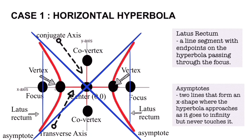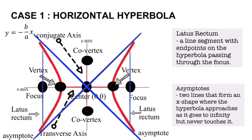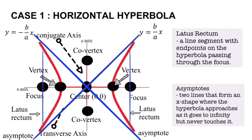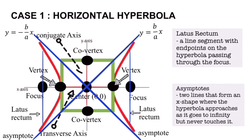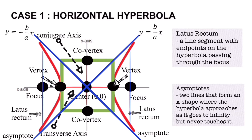The next parts are the asymptotes — these are the two lines that form an X shape where the hyperbola approaches but never touches. The equation of the asymptote with a negative slope is y equals negative b over a times x, while the asymptote with a positive slope is y equals b over a times x. The easiest way to draw the asymptotes is by drawing a rectangle covering the four points — the two vertices and the two co-vertices — and the asymptotes are the diagonals of this rectangle extending outward.